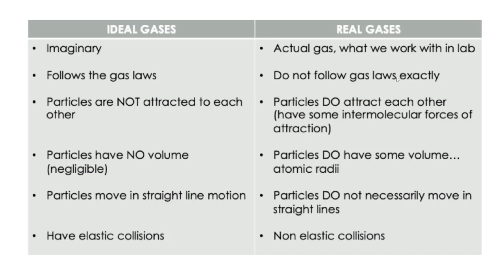Here is a summary of the differences. Ideal gases are not real — they're imaginary. Real gases are actual gases. Ideal gases follow the gas laws always; real gases don't follow the gas laws exactly unless you have the right conditions. Ideal gas particles aren't attracted to each other; real gas particles do attract each other and have intermolecular forces. In ideal gases, particles have no volume; in real gases, some particles are fairly large and take up space. Ideal gas particles move in straight lines; real gas particles don't necessarily move in straight lines — they may tumble or be attracted to other gas particles, changing their trajectory. Finally, ideal gases have elastic collisions, whereas real gases have non-elastic collisions.